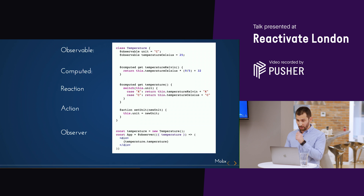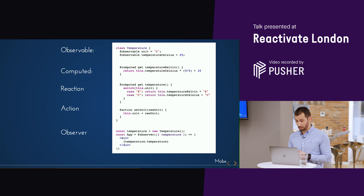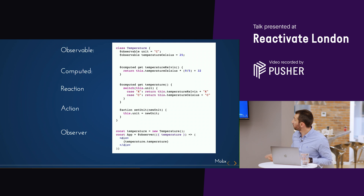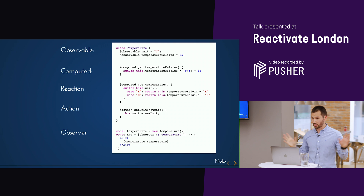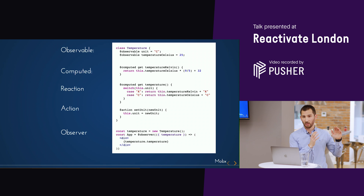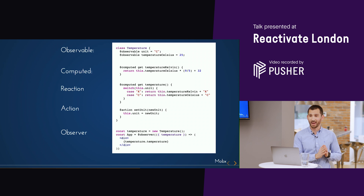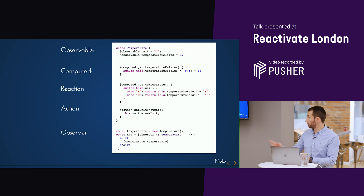Last but not least, we have the observer — the component that is actually watching the state. In this example, the component App declares the observer, which observes the temperature instance and displays the temperature computed value. These are two different objects: temperature knows the state and knows how to change it, while App doesn't know anything about manipulating the state — it just displays the temperature. As soon as any value changes in the producer, the computed value automatically updates and notifies the observer.